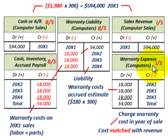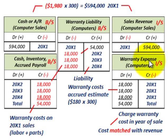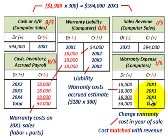For the expense warranty, we have to match our warranty costs with our revenue. Since the sales revenue included both the computer and the warranty, we must recognize the full warranty expense in the year of sale. That means the full $54,000 — $18,000 per year over 3 years — is charged to warranty expense in 20x1 to match the revenue earned that year.